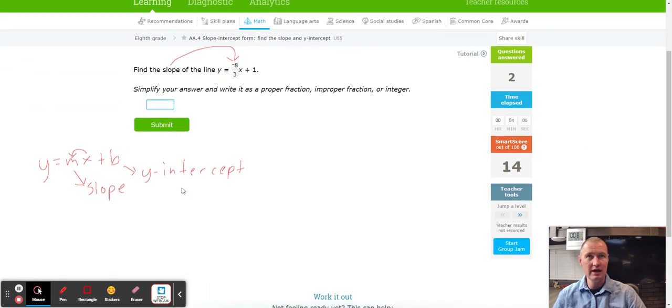Next up we got find the slope, and again the slope is directly in front of the x, so we got negative eight over three.